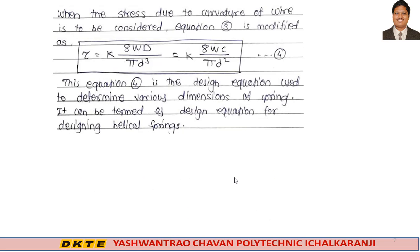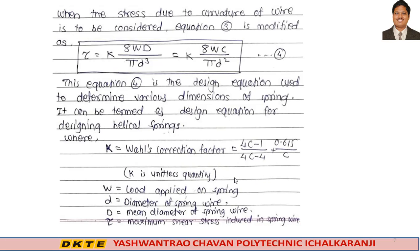When the stress due to curvature of wire is also considered, equation 3 is modified as: tau equals K into 8WD divided by pi d cube, or K into 8WC divided by pi d squared. This is equation number 4, which is the design equation used to determine various dimensions of the spring. Here K is Wahl's correction factor, W is load on spring, small d is diameter of spring wire, capital D is mean diameter of spring coil, and tau is maximum shear stress induced in the wire.